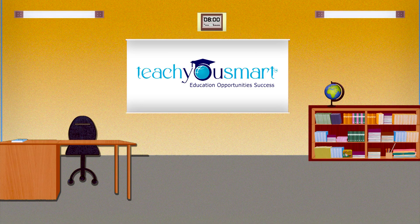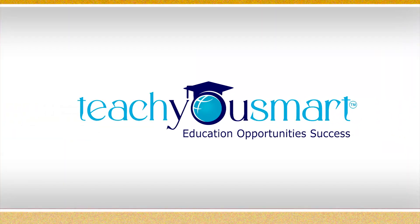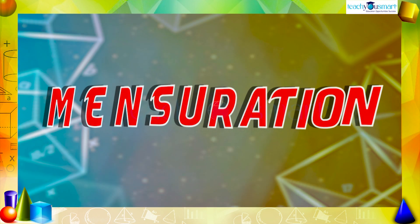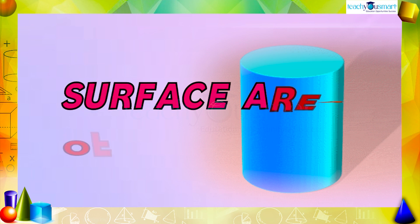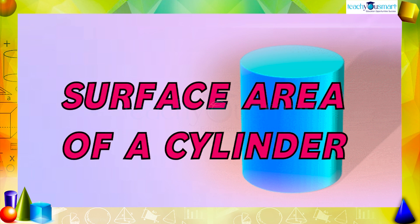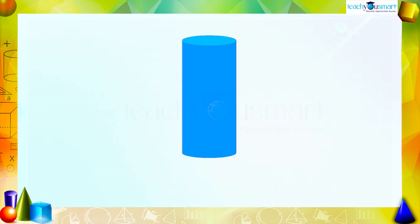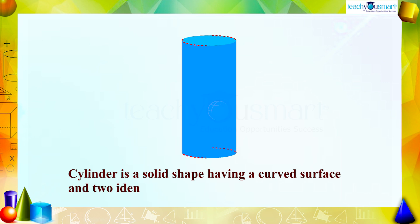Hello students, welcome to Teach You Smart. Let's continue our journey through mensuration. Today we are going to see the surface area of a cylinder. We know that a cylinder is a solid shape having a curved surface and two identical circles on its both ends. How can we find its surface area?